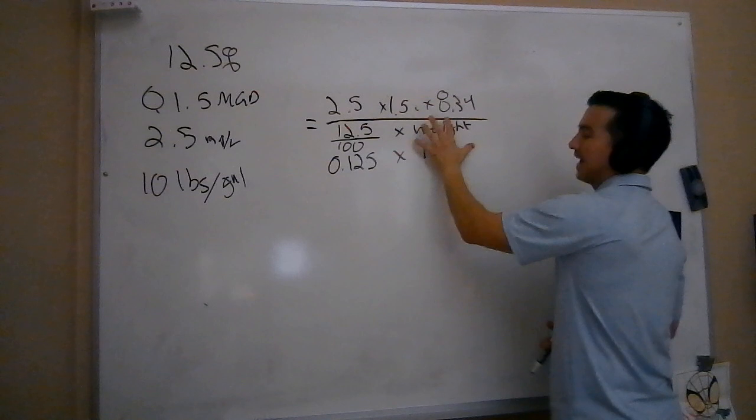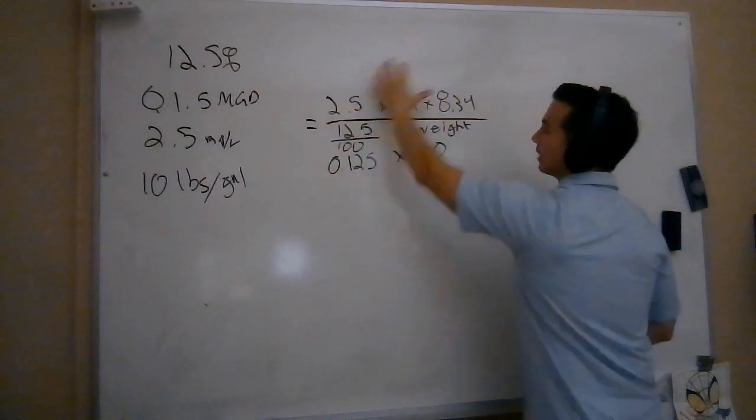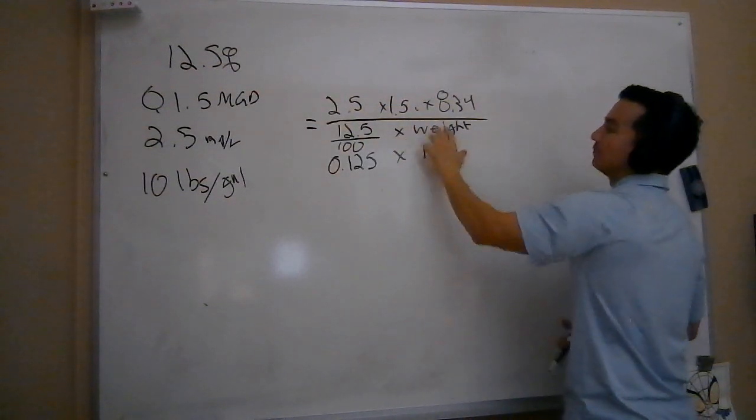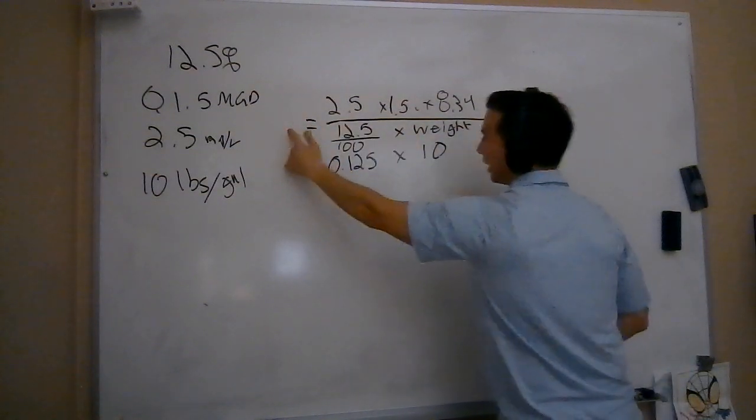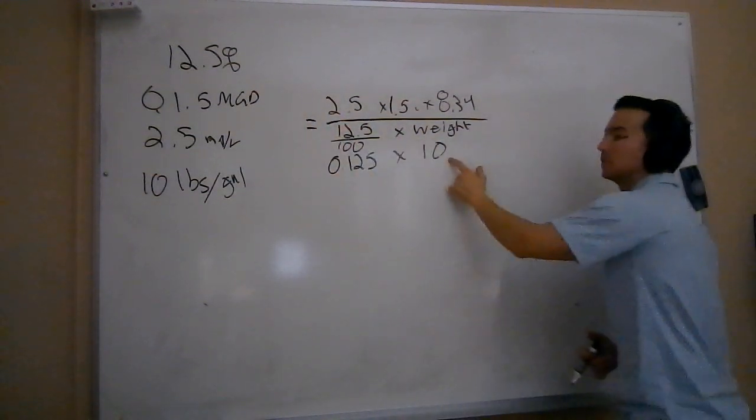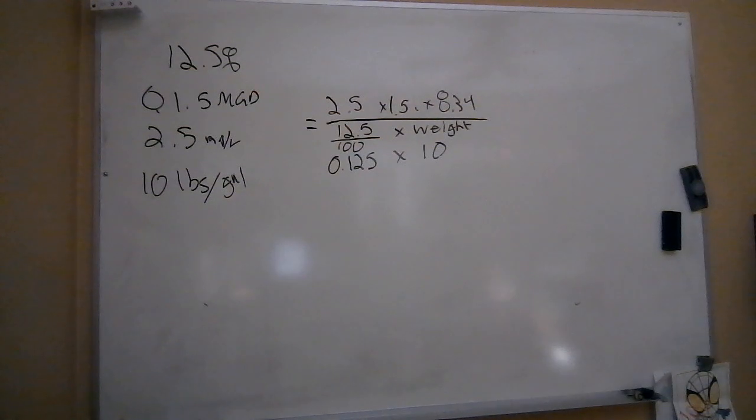By adding this, I'm taking what looks like my normal pounds formula and I'm turning it from calculating pounds into gallons. That's what this 10 pounds per gallon does. So now it's just a matter of running these numbers in my calculator.